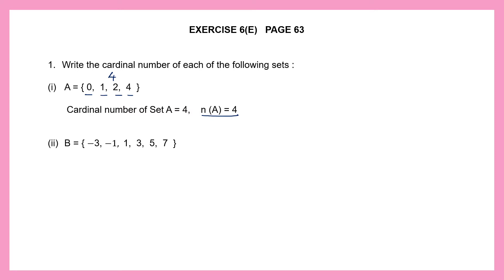Question 2: Set B has all these elements. Let's count the number of elements: 1, 2, 3, 4, 5, 6. So there are 6 elements. That means the cardinal number of set B is 6.